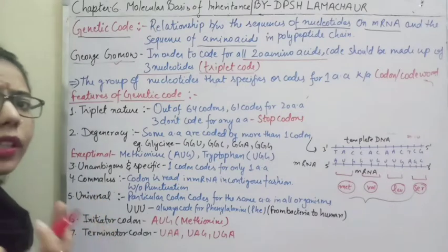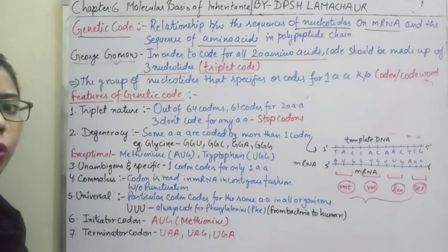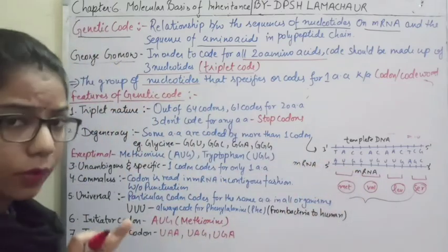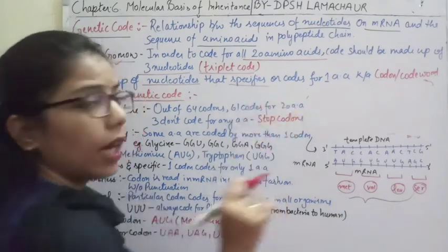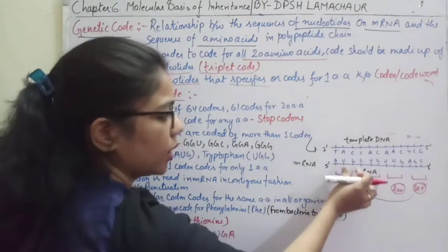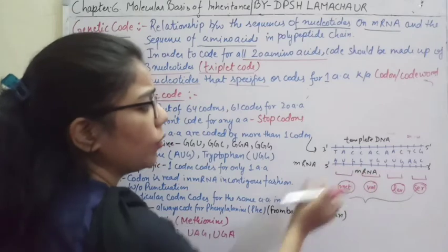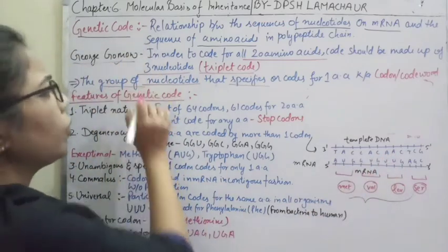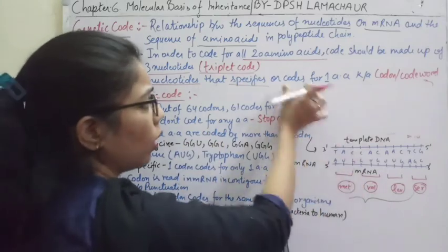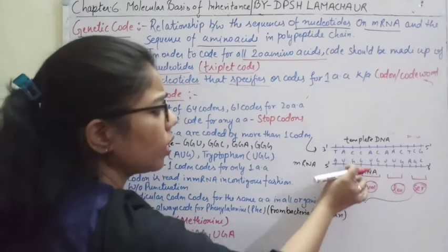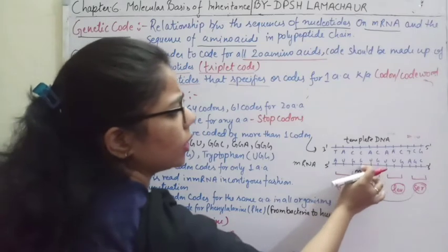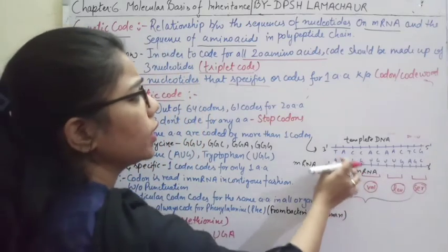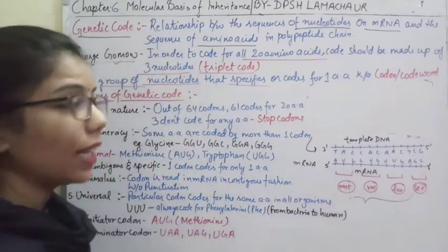Another question arises — what is a codon? The group of nucleotides present on the mRNA which is responsible for coding any particular amino acid is called a codon. For example, AUG is responsible for making methionine, so AUG is one codon. GUG codes for valine, UUG for leucine, AGC for serine. These are the code words — each codon is three nucleotides.